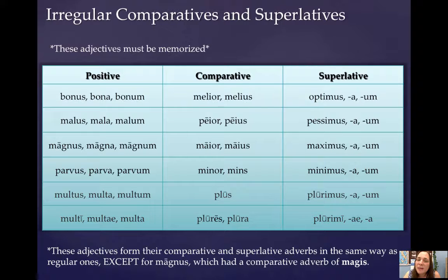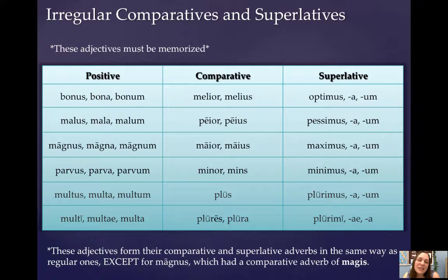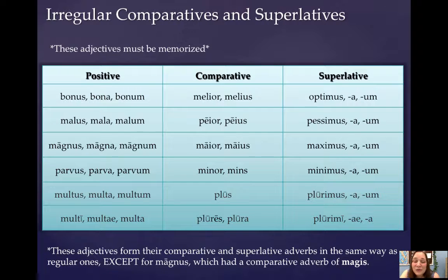Bonus, bona, bonum in the positive becomes melior, melius in the comparative, and then in the superlative, optimus, optima, optimum. You will notice that all comparative adjectives, whether they are regular or irregular, follow the third declension ending. So melior, melius — that looks very familiar to you. Likewise, the superlative adjective form, regardless of whether it's regular or irregular, follows the first and second declension adjectives.